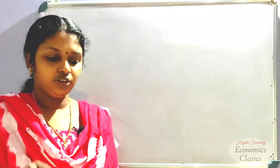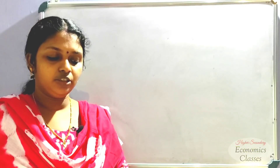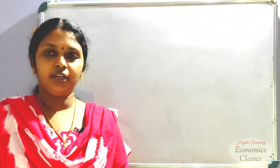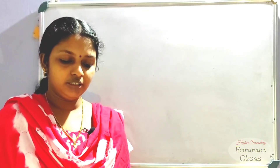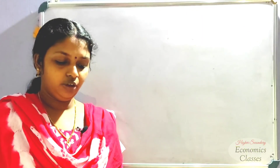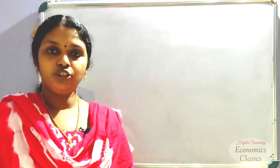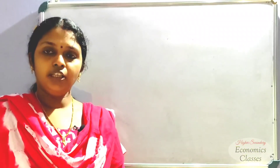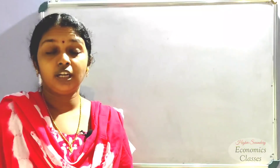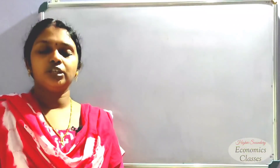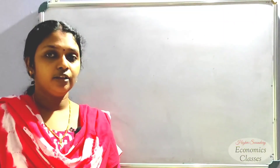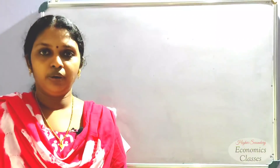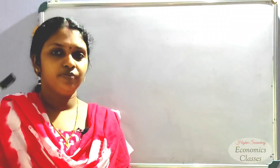The share of different sectors in the state domestic product for the year 2017-18 is given below. Construct a pie diagram. We have three sectors in the state domestic product. This is the shape of the pie diagram.